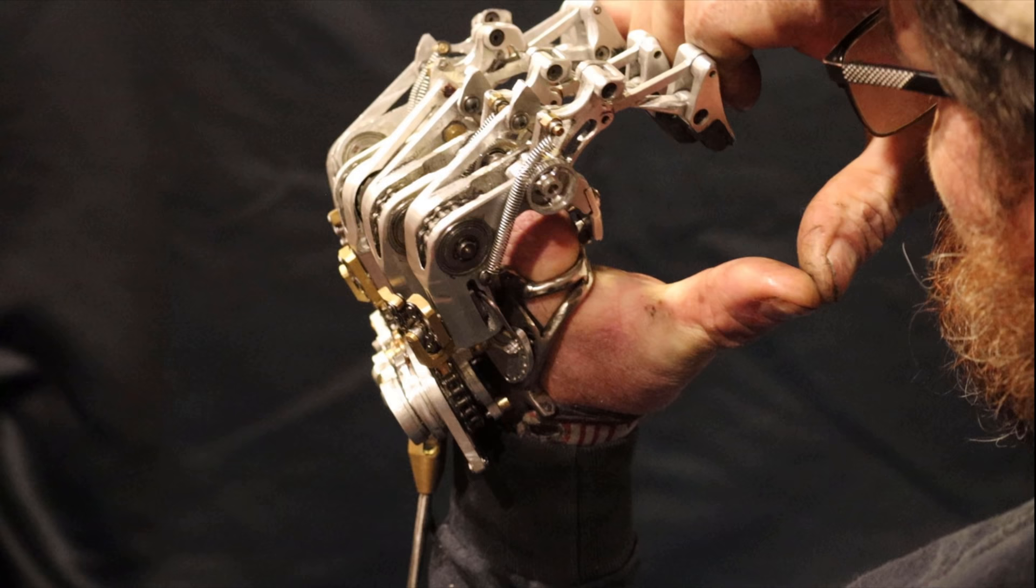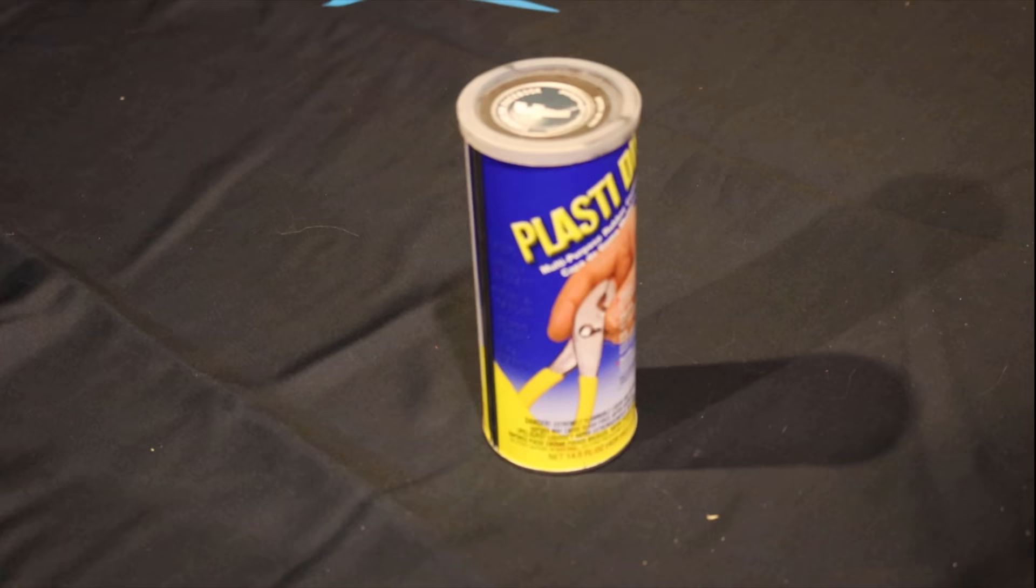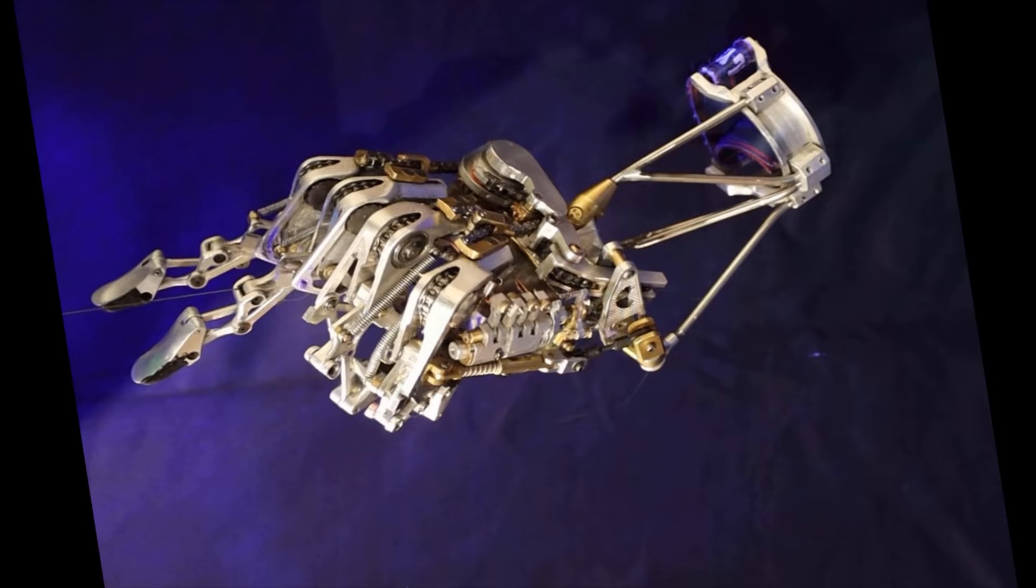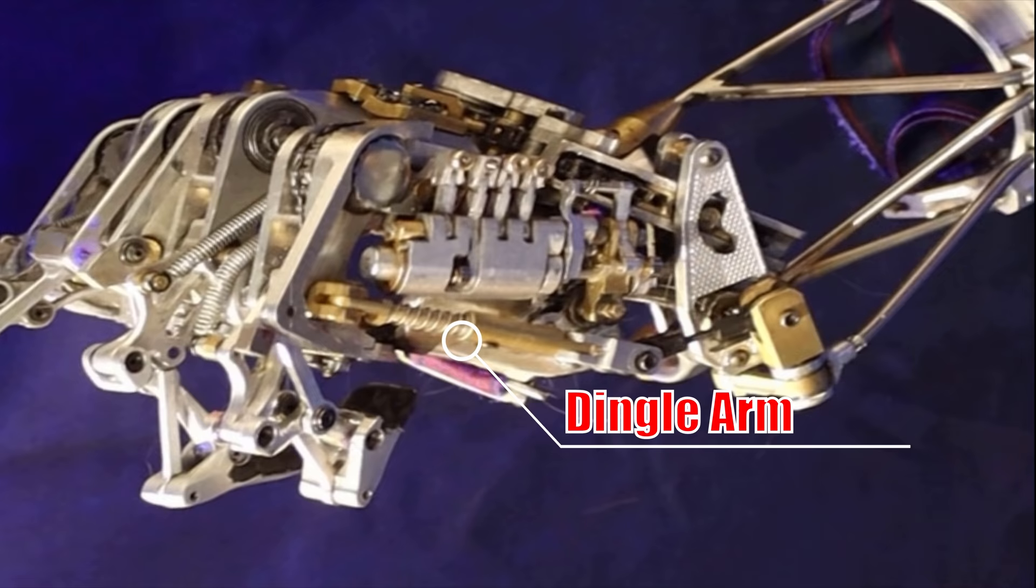Moreover, whenever a four-cent score emotation is required, it may also be employed in conjunction with the reciprocation of the dingle arm and over-traveling of the lunar wane shaft.